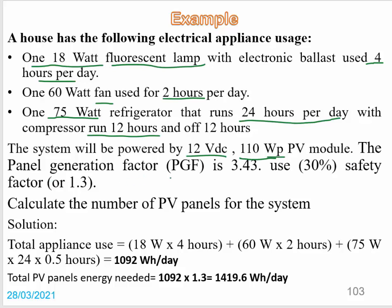The panel generation factor is 3.43 — this value is for Thailand. We also need to apply a safety factor of 30%, which is the same as multiplying by 1.3. We can use either the 30% or multiply directly by 1.3 as the safety factor.